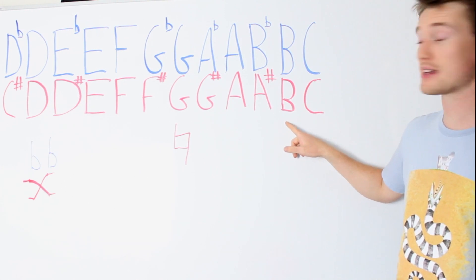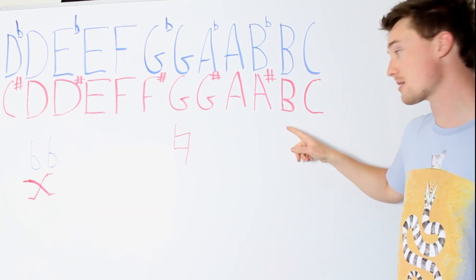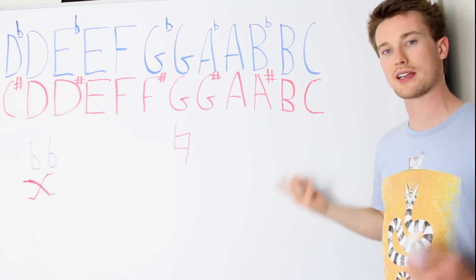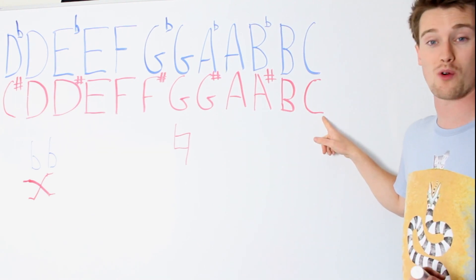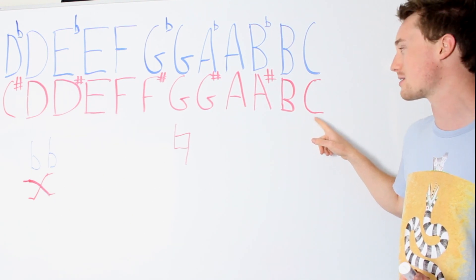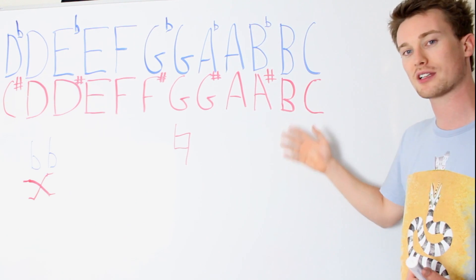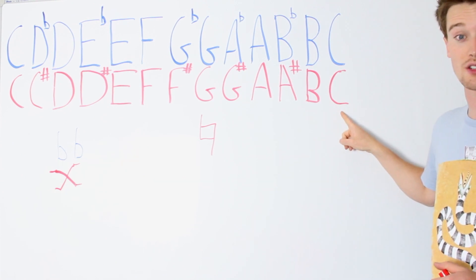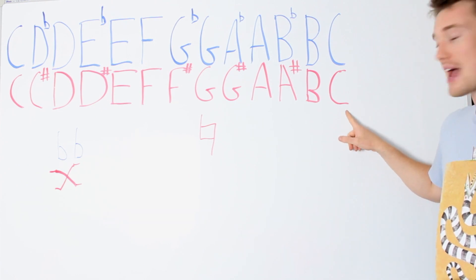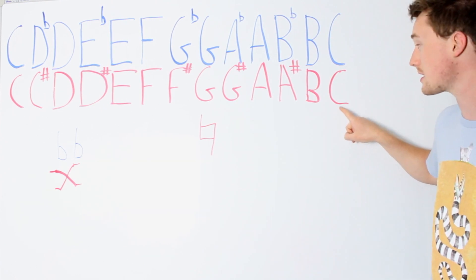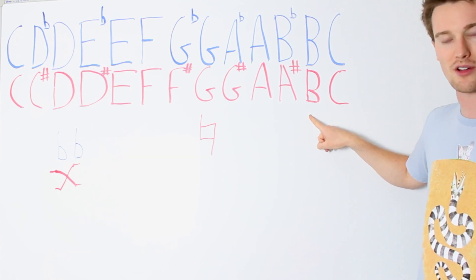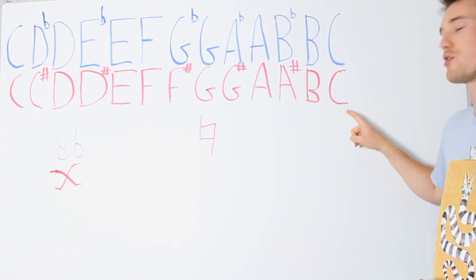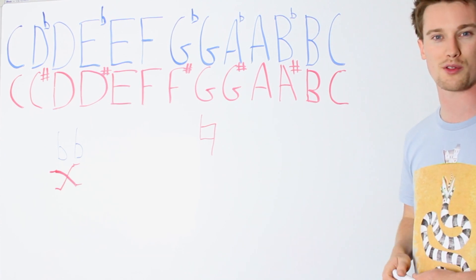Finally, going up a semitone from B gets you to C, with nothing in between. If you see a B sharp in sheet music, it's harmonically equivalent to C — you'd hear the same note. Equally, a C flat means moving back a semitone from C, so you'd hear a B. C flat is the same tone as B, and B sharp is the same tone as C. It's a little confusing, but it does come up in music.